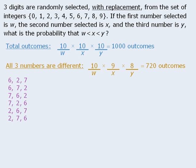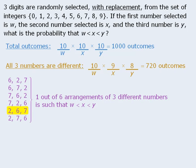So we can take each set of three different numbers and arrange them in six different ways. Now notice that of these six different arrangements, only one is such that the three numbers are in ascending order. So we can conclude that one out of six arrangements of three different numbers is such that the three numbers are in ascending order.